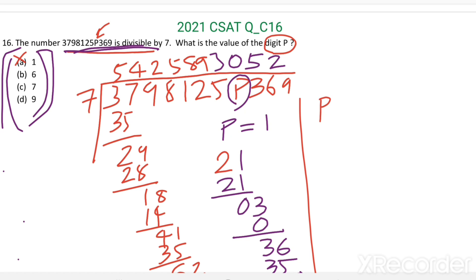When P equal to 6, then 2, 6. Instead of this P, we are getting remainder 6. Then in 26, how many 7s are there? 3 7s are 21.